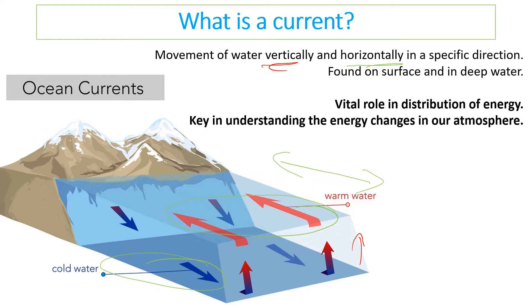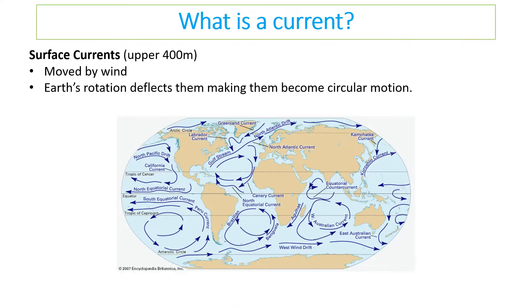Ocean currents have a vital role in the distribution of energy. They control our weather, our climate, and impact energy changes in the atmosphere. Ocean currents are not understood by a lot of people but they have a massive effect on everything. Surface currents refer to the upper 400 meters of water.